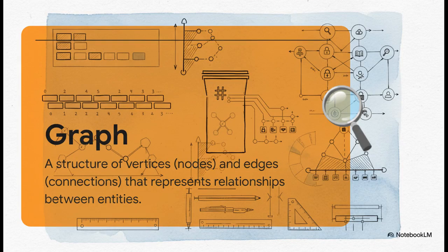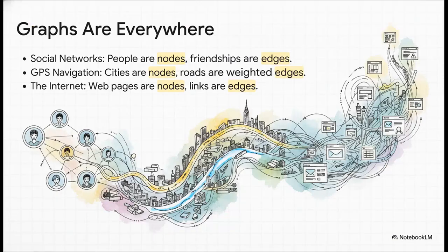And the answer is the most flexible data structure of them all, the graph. A graph is simply a collection of points, we call them nodes or vertices, and the lines connecting them, which we call edges. It sounds so simple, but this basic concept is powerful enough to model almost any network you can possibly imagine. Your social network is a graph, where you are a node, and your friendships are the edges. When your GPS finds the fastest route, it's treating cities as nodes and roads as edges that have weights for things like distance or travel time. Even the World Wide Web itself is just one giant graph, with web pages as the nodes and hyperlinks as the edges that connect them all.